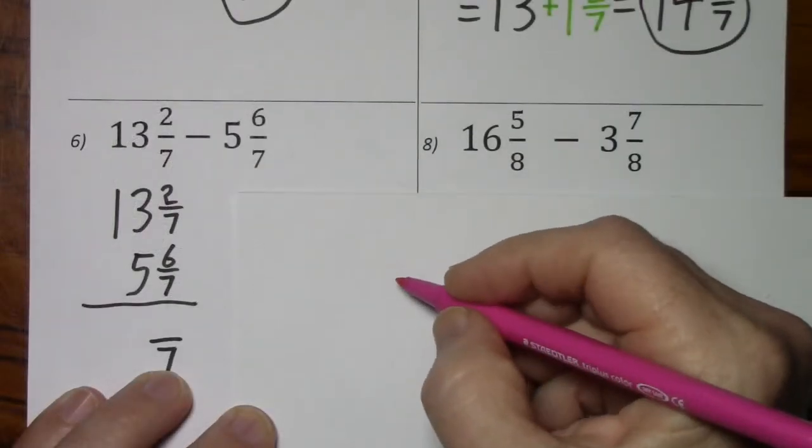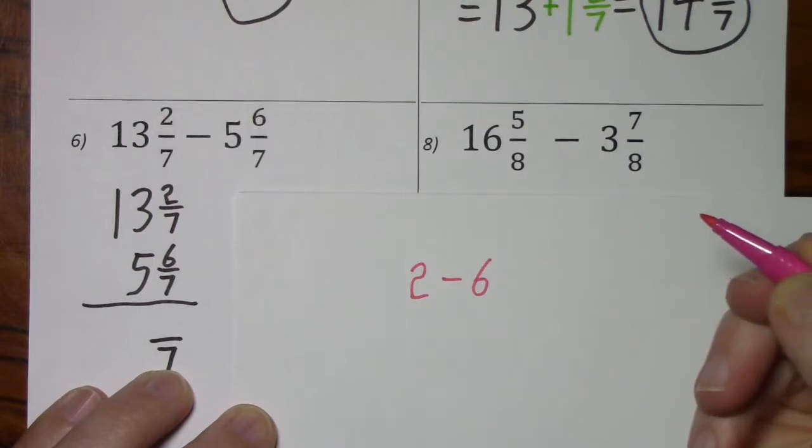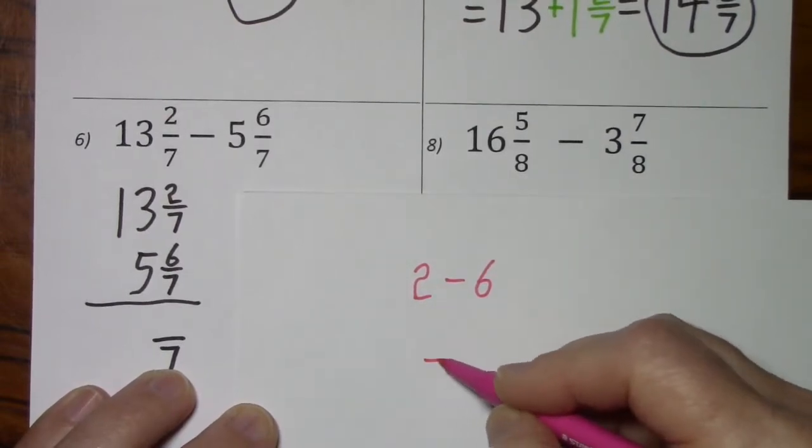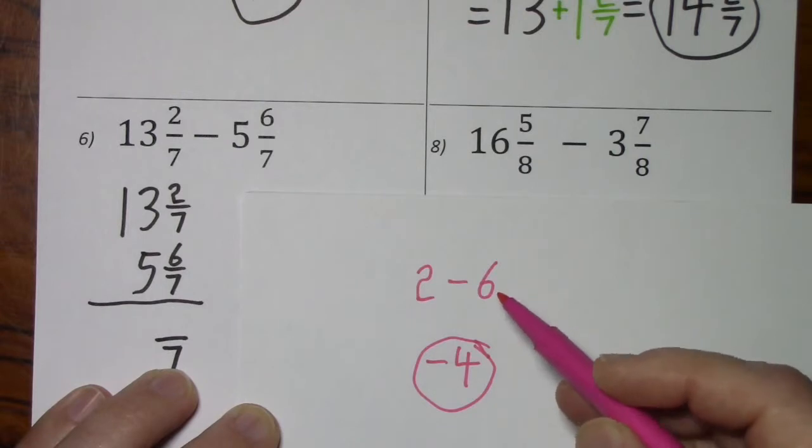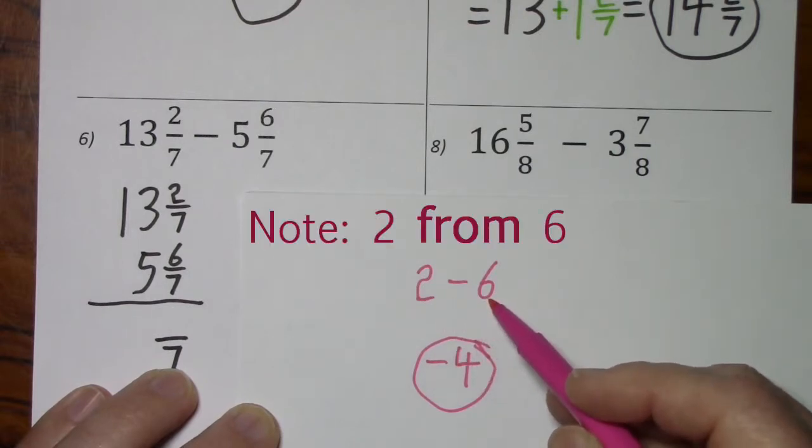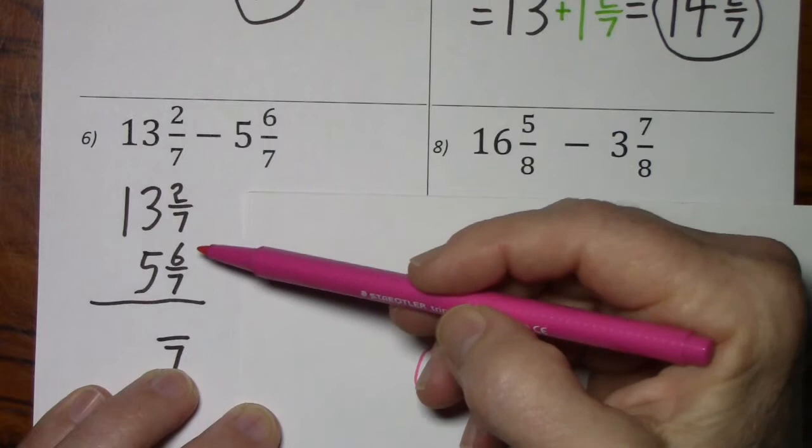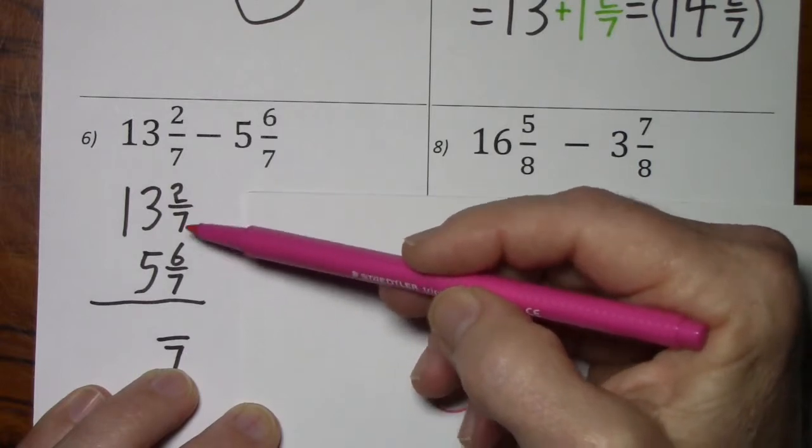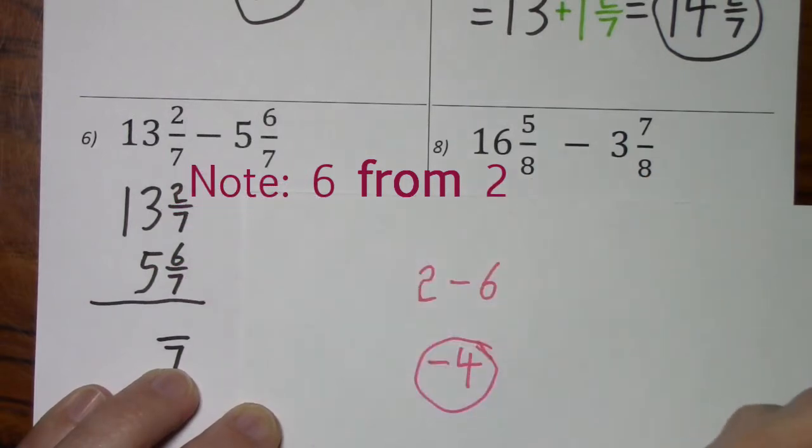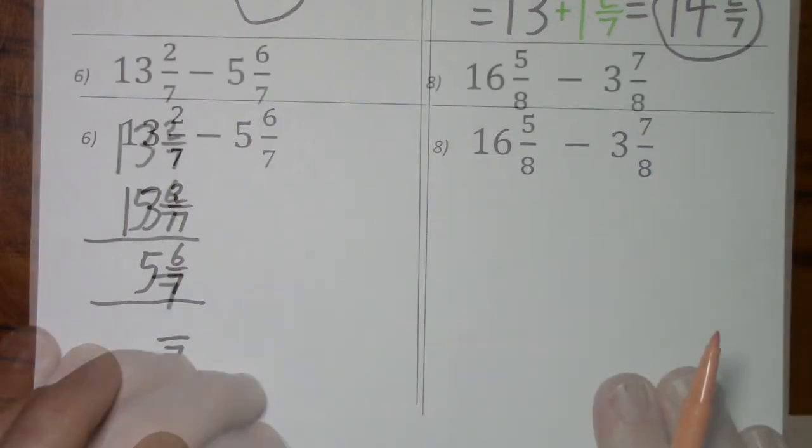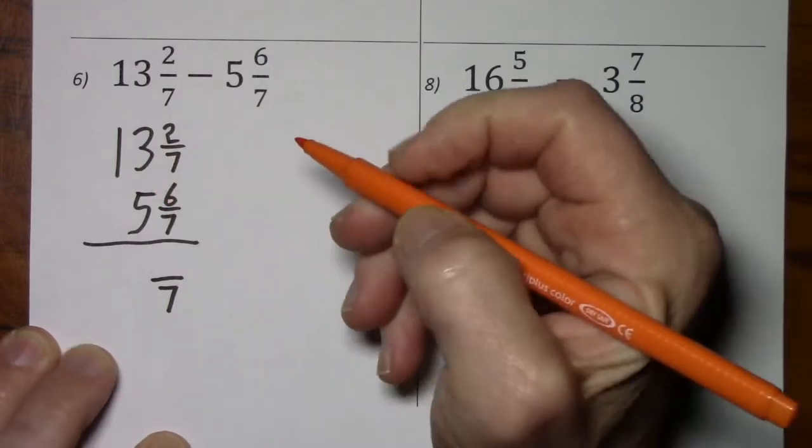If you were just dealing with integers and you had positive 2 with a negative 6, you could say, well, the answer's negative 4. And you would be correct. But what you actually do is you subtract 2 from 6 and you keep the sign of the larger. In this case, you can't subtract 6 from 2. And I can't rearrange them because the larger number, 13, is on top. So what we do is borrow 1 from the 3 and we add it to the 2 sevenths.